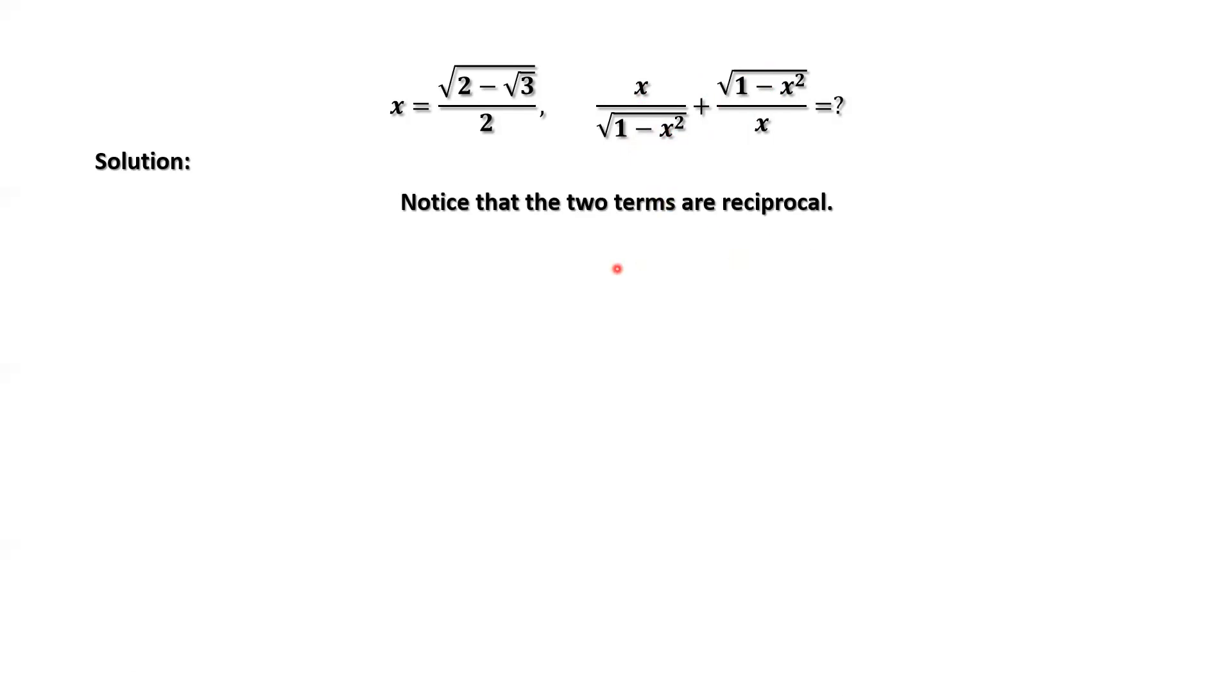Therefore, we consider the sum square first. Expanding the sum square, we have x squared over 1 minus x squared plus 2 plus 1 minus x squared over x squared.